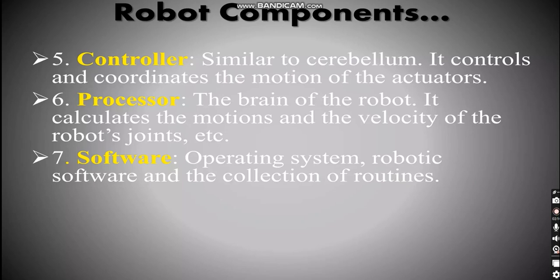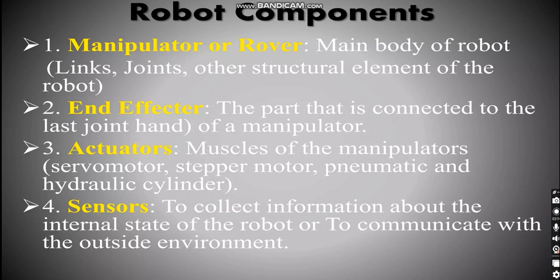Of course, the software is the operating system of the robot. The processor is the brain of the robot. The controller is the cerebellum of the robot. It controls and coordinates the motion of the robot.